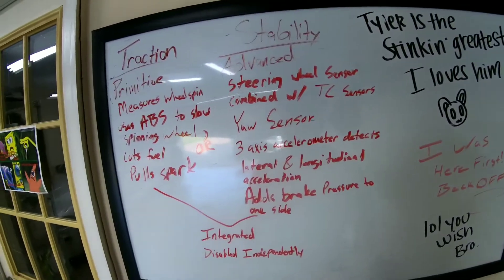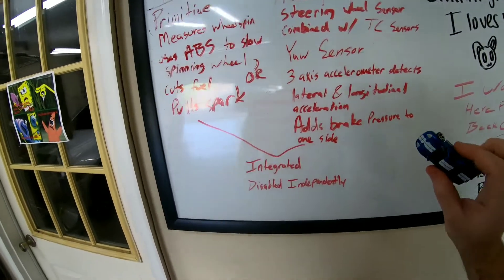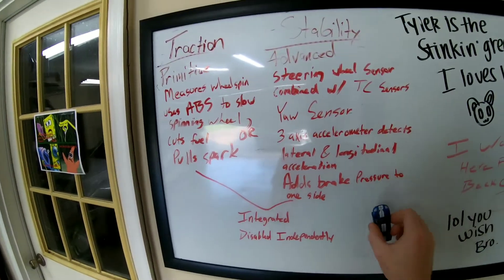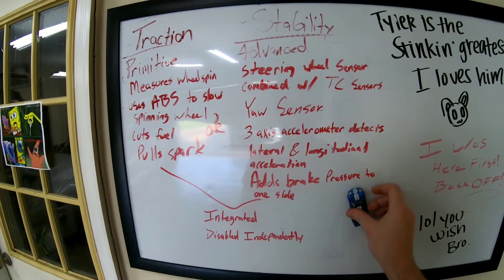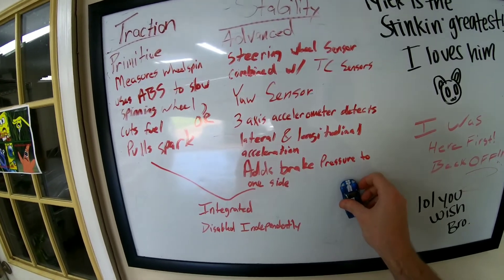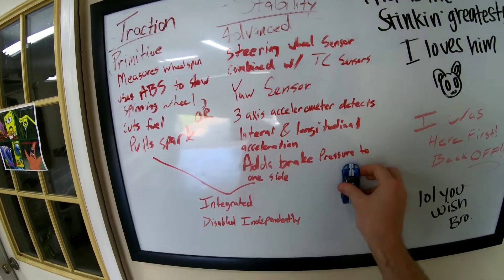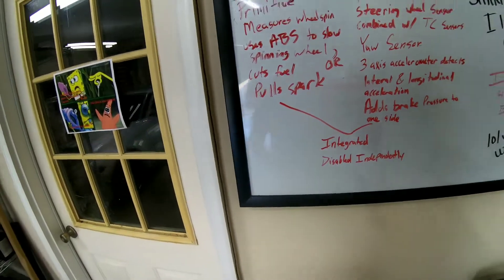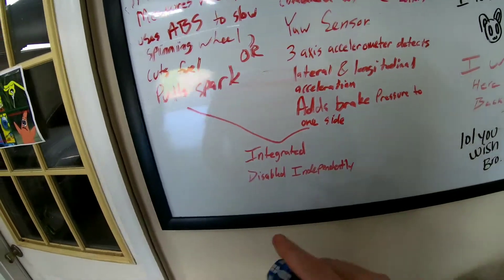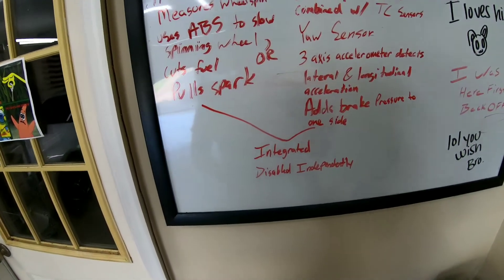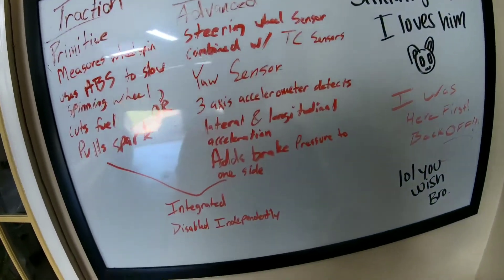Whenever any discrepancy is found by any of those sensors, it's going to apply braking pressure to straighten the car out. So if you're coming around one way, it's going to apply braking pressure to the wheels that are spinning faster to straighten it out. Now both of these systems run together — they are integrated into one another, but they can be disabled independently depending on your vehicle.